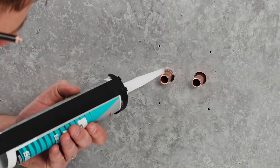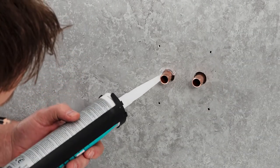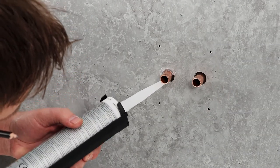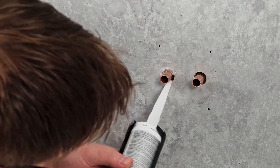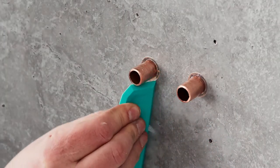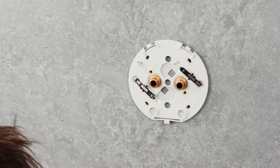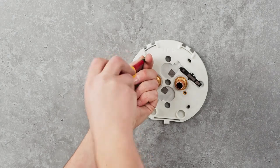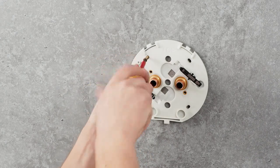The supply pipework can then be siliconed around to prevent water ingress back into the fabric of the wall. The backplate can then be secured into place using the fixing supplied or those more appropriate for the wall material if necessary.